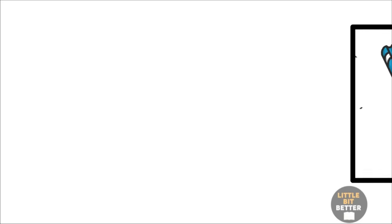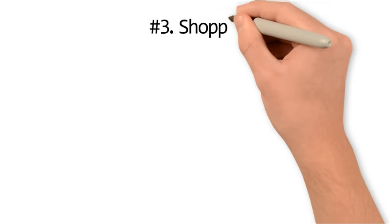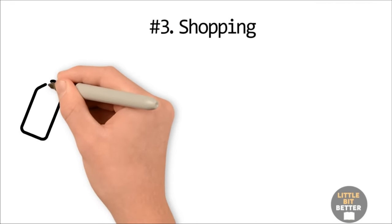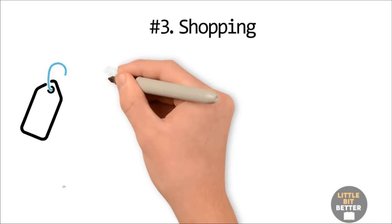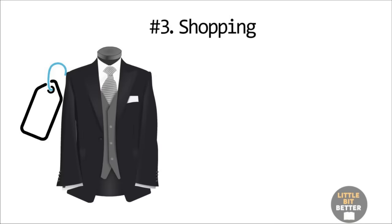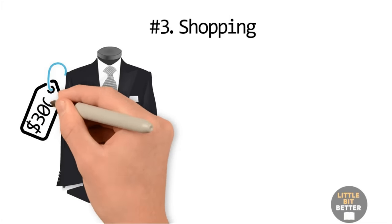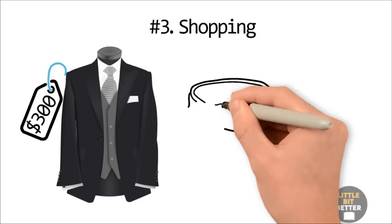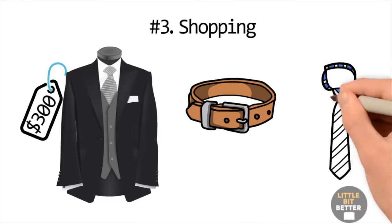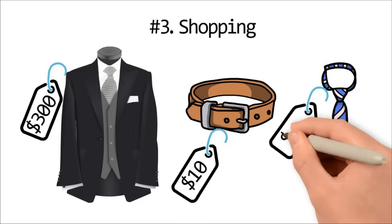Number 3: Shopping. If you are buying expensive items, be careful if you are also offered extra items. For example, after buying a $300 suit, items such as a belt and tie priced at $10 will seem quite cheap to you, and you will be less likely to negotiate their price.